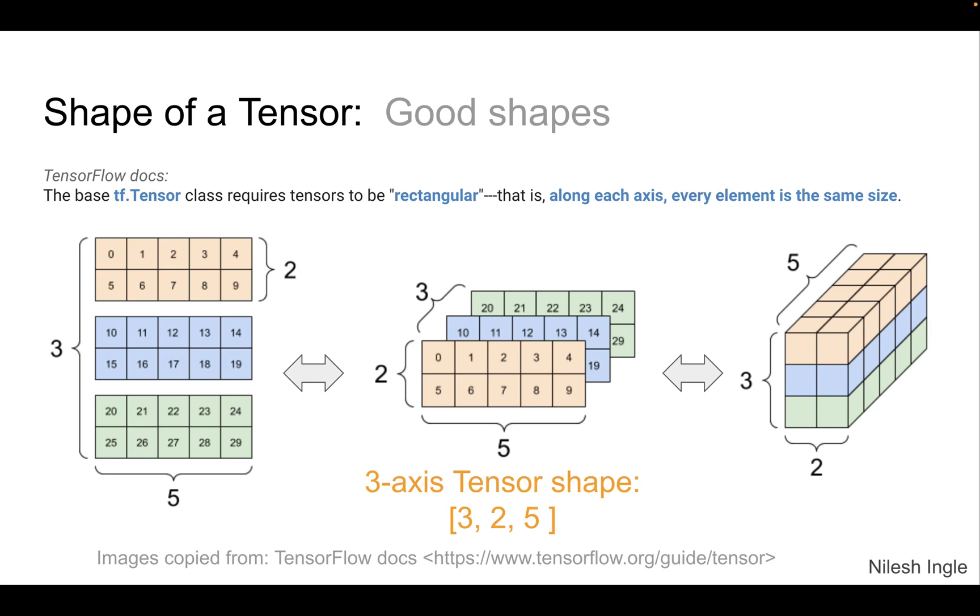Now, by default, TensorFlow expects that the tensors are uniform in shape. What I mean by that is, the number of elements along each axis is uniform. So let's say if we look at the axis, we look at this shape here, which says two, both these orange rows have the same shape. And that's what is expected.